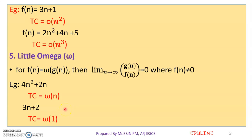So we have all five asymptotic notations. We use them to represent time complexity. Big O represents the worst case time complexity, omega notation is used for the best case time complexity, theta is used for the average case time complexity. And the two additional notations are little o and little omega. These are the asymptotic notations. Thank you.